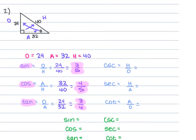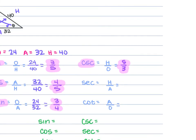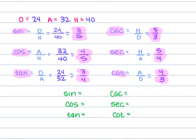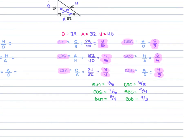The reciprocals: cosecant is 40 over 24, which gives 5 over 3. Secant is hypotenuse over adjacent, simplified to 5 over 4. Cotangent is adjacent over opposite, simplified to 4 over 3. So our answers are: sine 3/5, cosine 4/5, tangent 3/4, cosecant 5/3, secant 5/4, cotangent 4/3.